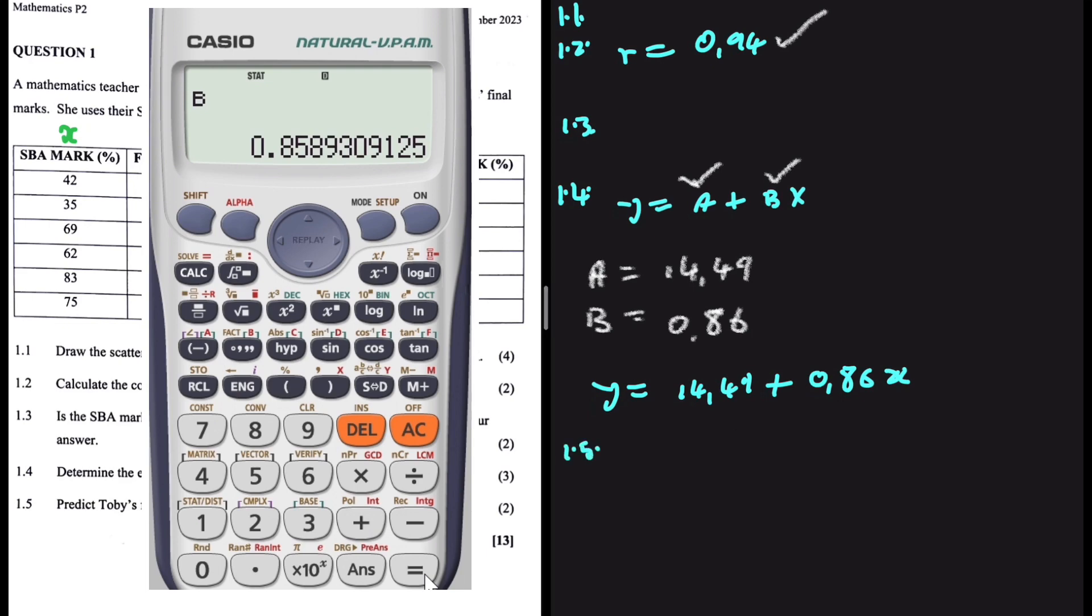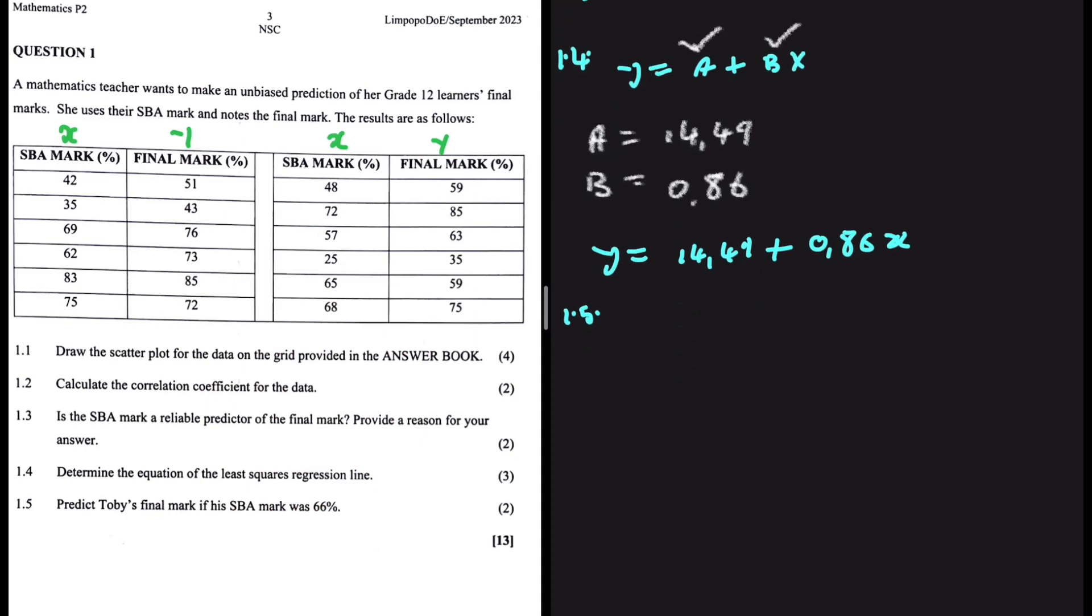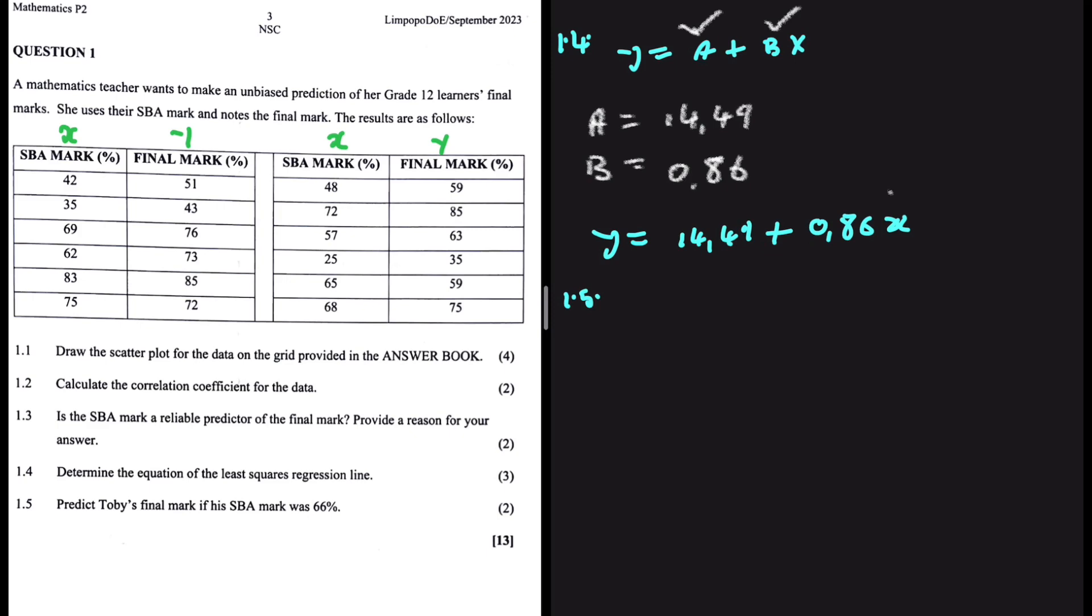Let's look at 1.5. Predict Toby's final mark if his SBA mark was 66%. So we just need to substitute 66 into our equation. Y being close to 14.49 plus 0.86 times 66. Let me just go ahead and do that using my calculator. I'm getting 71.25. So that will most likely be Toby's final mark if his SBA mark is 66%.